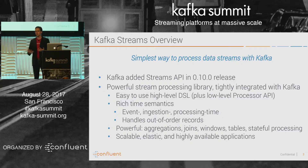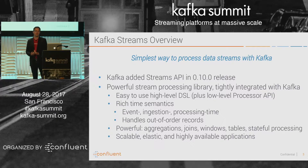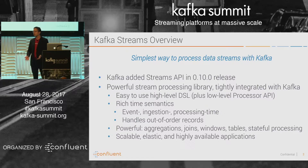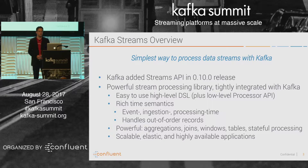Kafka Streams has an easy-to-use high-level DSL where you can express your computation logic. There are rich operators like joins, aggregations, filter, and things like that. It also has a lower-level processor API for anything the DSL does not cover, so you can build your own operators to customize it if required.